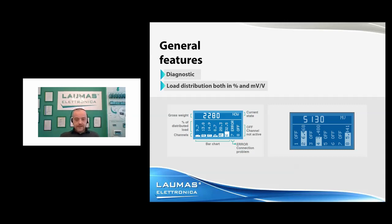You can also visualize for every single channel the load distribution in percentage on every active channel, and the signal response in millivolts on the right side. This feature is very useful during the first calibration of your weighing system, because you can immediately understand if the load is well distributed across all the load cells.